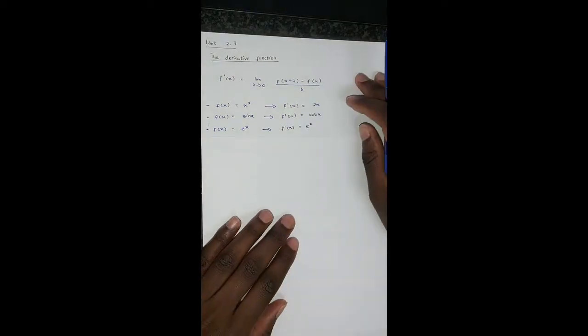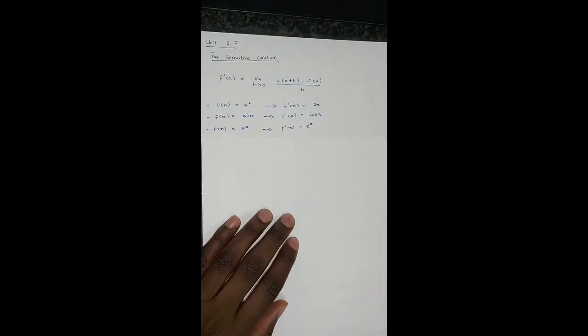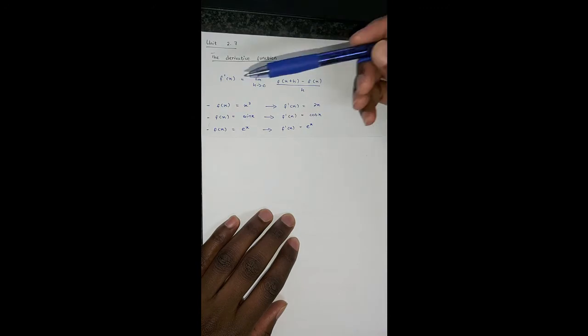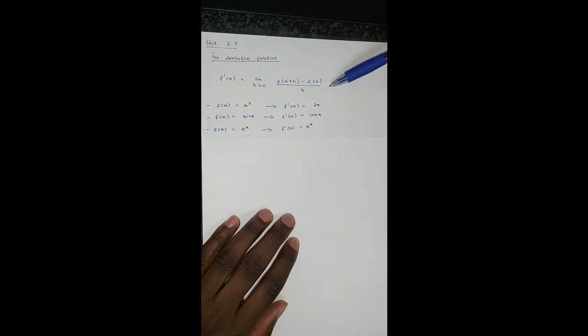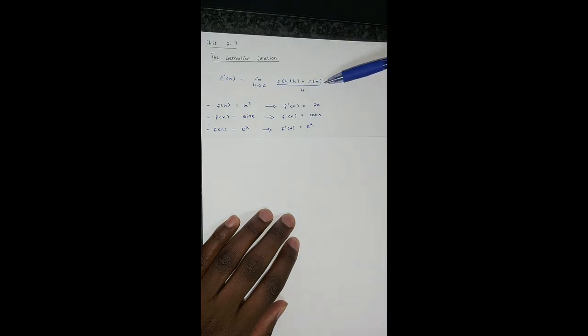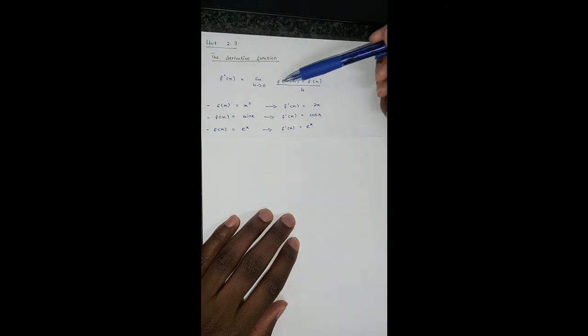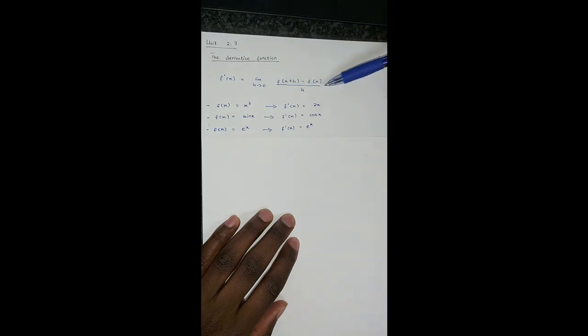The last topic on unit 2 is unit 2.7, the derivative function. From unit 2.6, we saw the definition of a derivative — this was the second definition. The limit as h approaches 0 of f(x+h) minus f(x), everything over h.